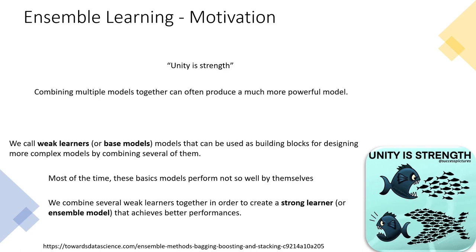We call these individual components weak learners or base models — building blocks for designing more complex models by combining several of them. Most of the time these base models perform not so well by themselves, which is why they are called weak learners. But once we combine several weak learners together to create a strong learner, we can achieve much better performance. Combining weak learners is called ensembling.